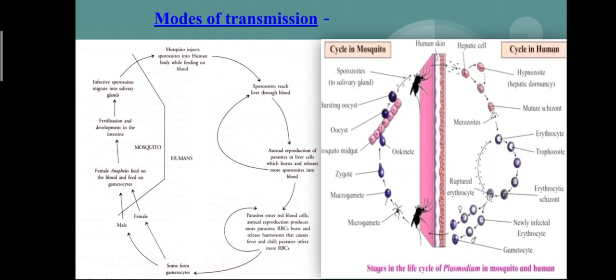This parasite involves two hosts in its life cycle: the human and the female Anopheles mosquito. When the infected female Anopheles sucks blood, it transfers sporozoites. The sporozoites are the first stage that enters the human body. Sporozoites reproduce asexually through fission — known as schizogony — in liver cells or erythrocytes. The cells formed are then called merozoites.